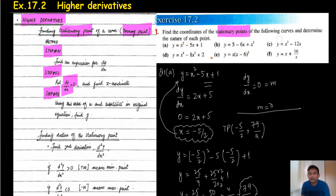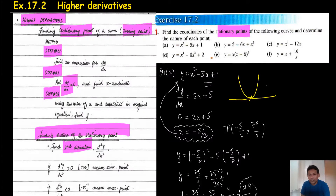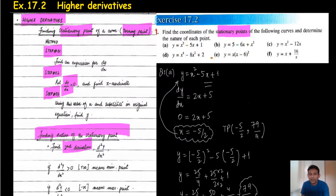Next, determine the nature of the turning point. To find the nature, find the second derivative d²y/dx². When you have a positive x² term you get a curve. The gradient becomes 0 at the turning point.